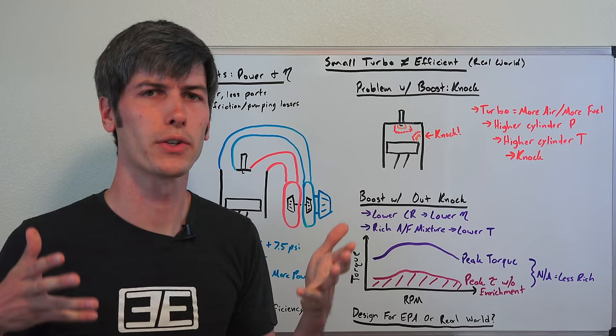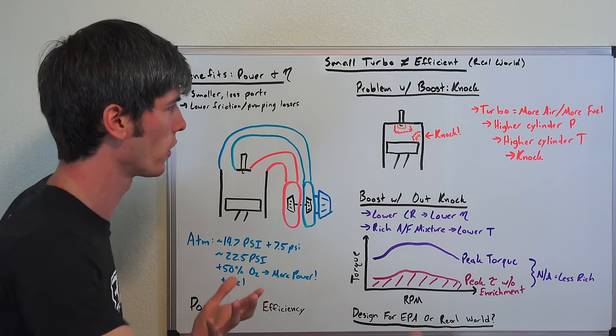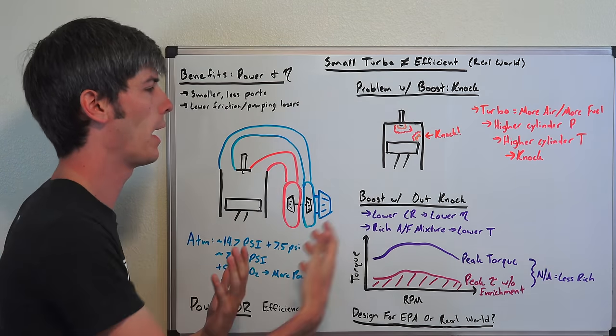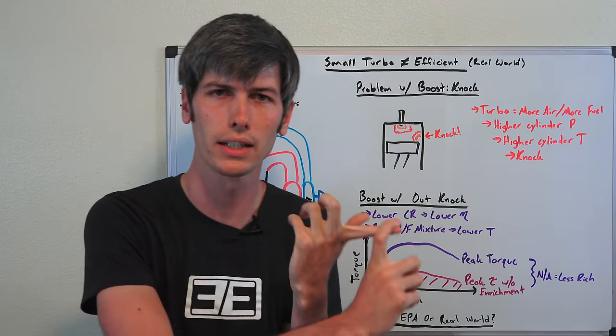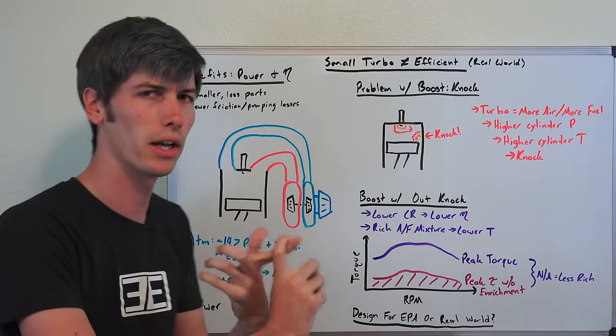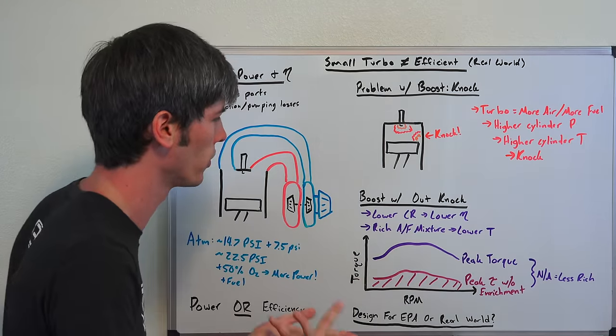So a turbocharged engine, it's adding in air, it's adding in fuel, and as a result you're having higher cylinder pressures. Each individual cylinder has higher pressures, and as a result each individual cylinder has higher temperatures. All of this gives you a greater likelihood to have knock. So what things can the manufacturers do in order to eliminate knock so that you can still have high boost levels, high power, and not have this knock destroying your engine?